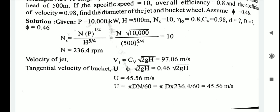Solving the specific speed formula gives N = 236.4 rpm. Next, calculate the velocity of the jet V1: V1 = Cv × √(2gH). Substituting Cv = 0.98, g = 9.81, and H = 500, we get V1 = 97.06 meters per second.